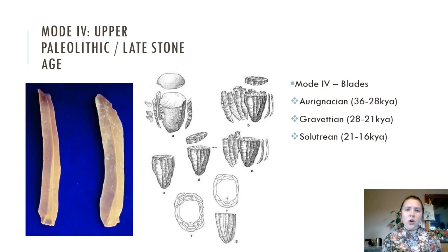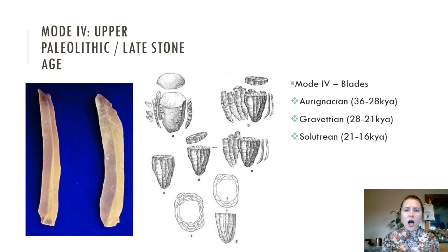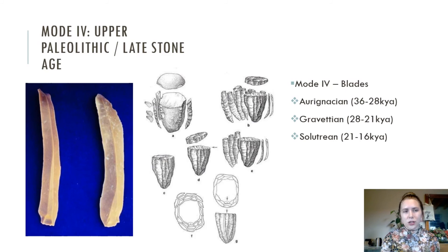Mode 4 corresponds with the Upper Paleolithic and the Late Stone Age. Classically, this is characterized by the widespread appearance of blades and blade technology, with a blade being defined as a flake that is at least twice as long as it is wide. Here we see a particularly high degree of variation, especially when compared to the Lower and Middle Paleolithic, as well as extensive diversification of technologies over relatively short periods of time. After about 40,000 years ago, lithic assemblages varied a lot both geographically and chronologically. Along with blades, we also see bladelets, backing, hafting, projectiles, increases in bone and antler tools, higher standardization of tool categories, as well as personal ornamentation and the appearance of art.